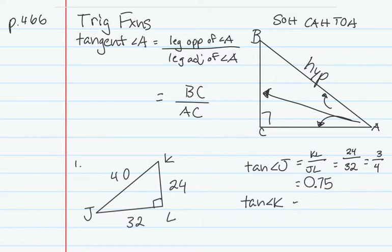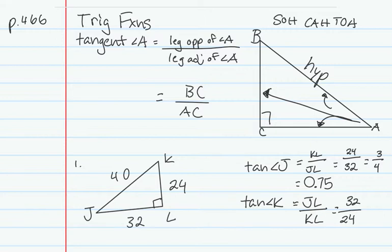They might also ask for the tangent of angle K. The side opposite of angle K is JL, so that gives us 32 over 24, which reduces to 4/3, approximately equal to 1.33 repeating. If they say round, just give 1.33. That's the first type of problem — just the ratio of sides.